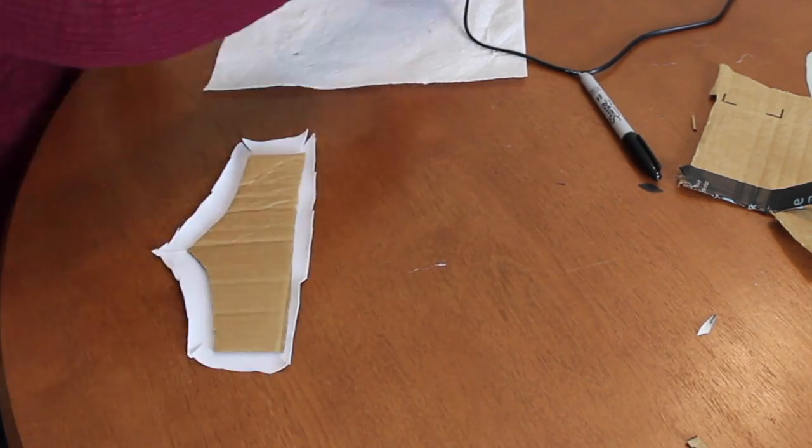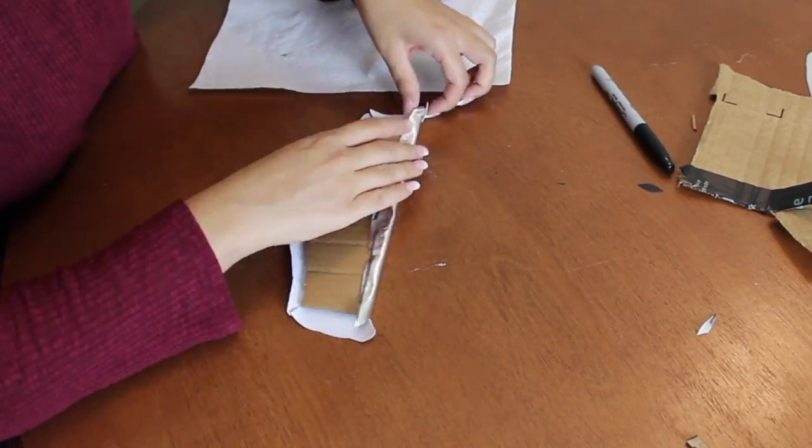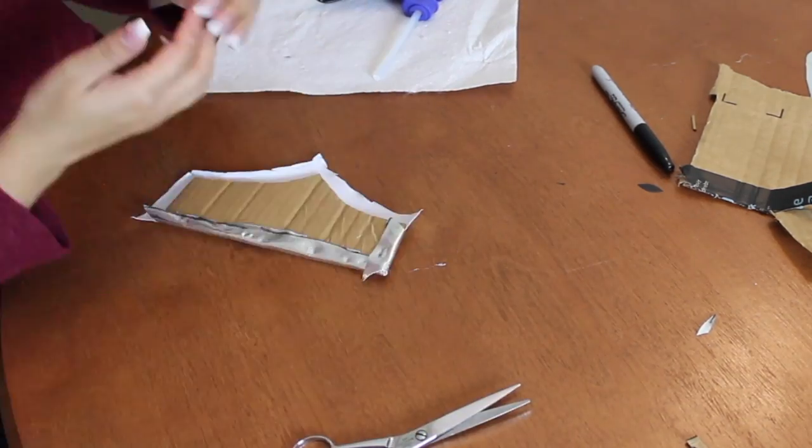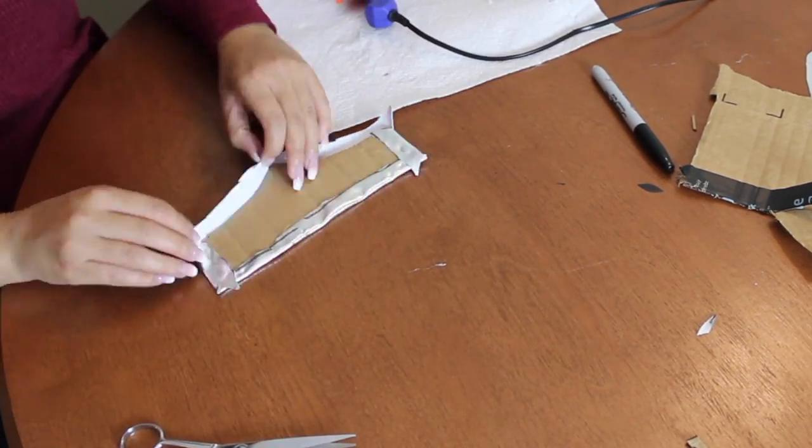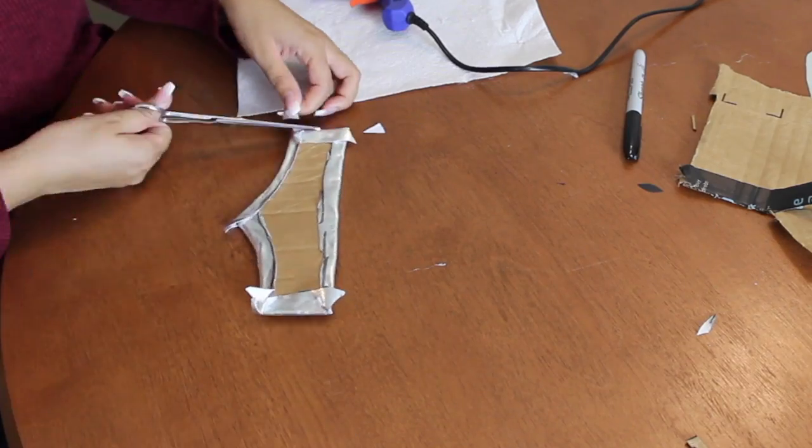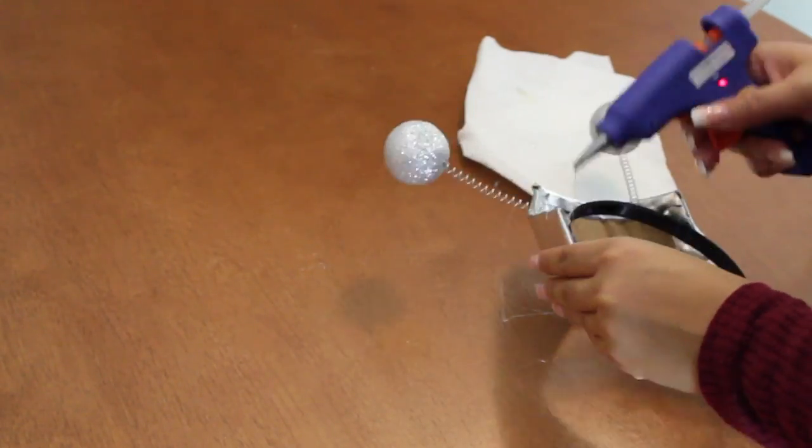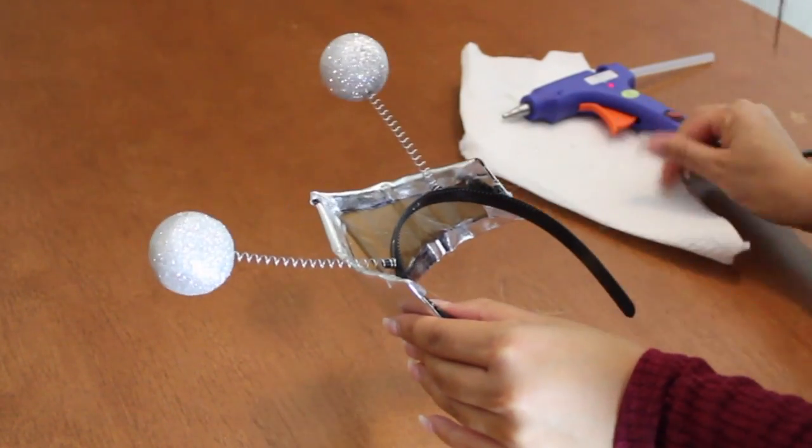Now it's time to grab your trusty glue gun, and get to gluing. It's helpful here to pull on the edges a bit, to help smooth it out. Then I used my glue gun to attach the crown onto my little alien antennas.